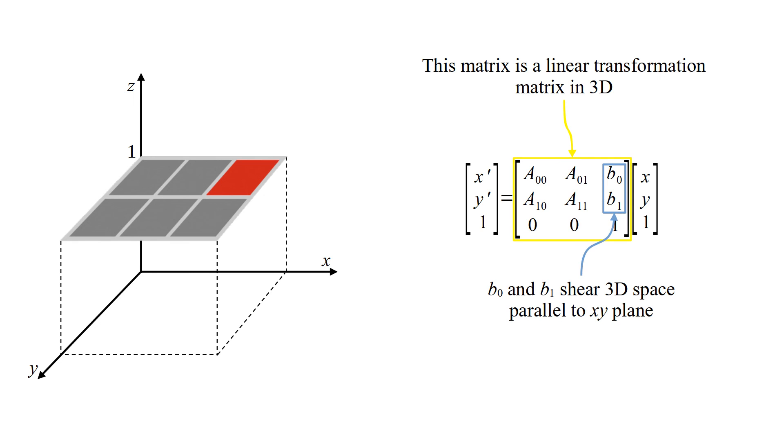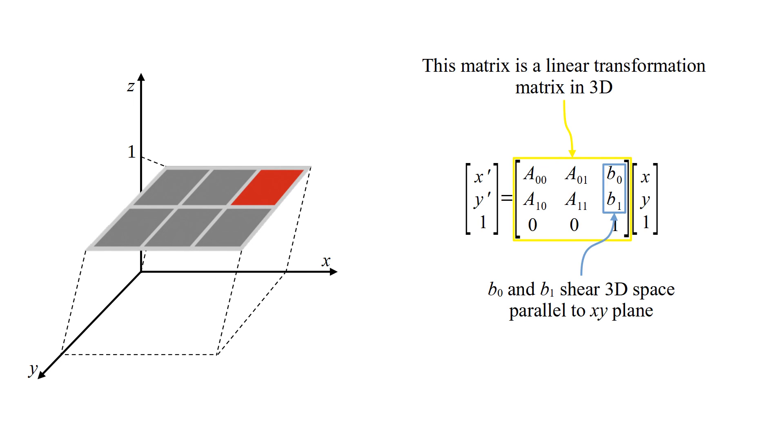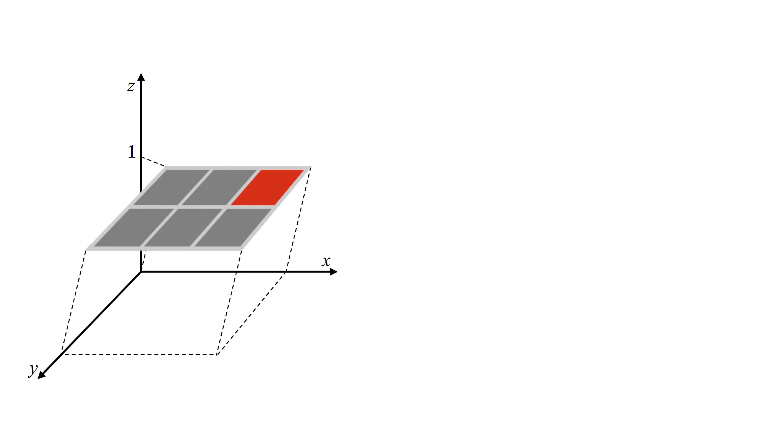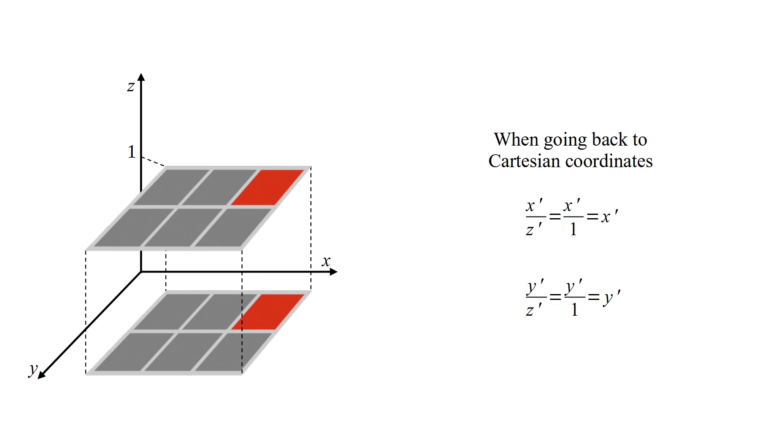B0 and b1 shear 3D space parallel to x-y plane. Translation of image over 2D z equals one plane is the result of shear in 3D space. When going back to Cartesian coordinates, x and y coordinates are divided by z coordinate. And this is translated image in Cartesian coordinates.